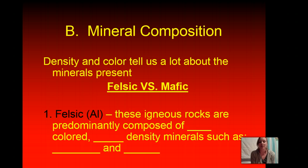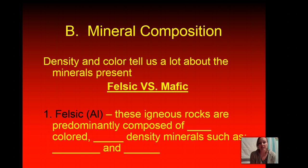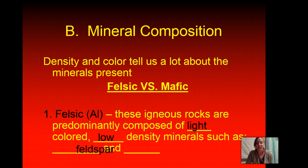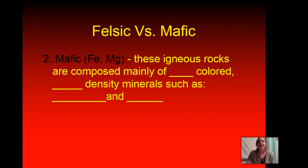The next way we classify igneous rocks is based on mineral composition. The density and color will tell us a lot about the minerals present. We consider felsic or mafic. Felsic has aluminum in it — that's why you'll see 'AL' next to the picture on your reference table. These igneous rocks are predominantly composed of light-colored, low-density minerals such as quartz and feldspar. Mafic rocks have iron and magnesium in them, shown by the symbols Fe and Mg — these are composed mainly of dark-colored, high-density minerals such as olivine and pyroxene.